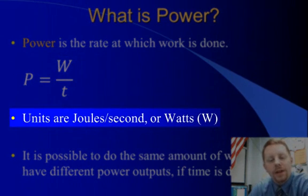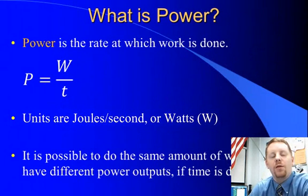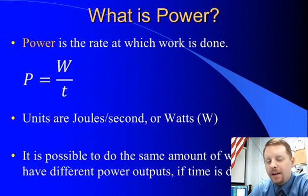And the units are the units of work over time, or joules per second. A joule per second is also known as a watt. A watt is abbreviated with the capital W, so you've got to be careful.